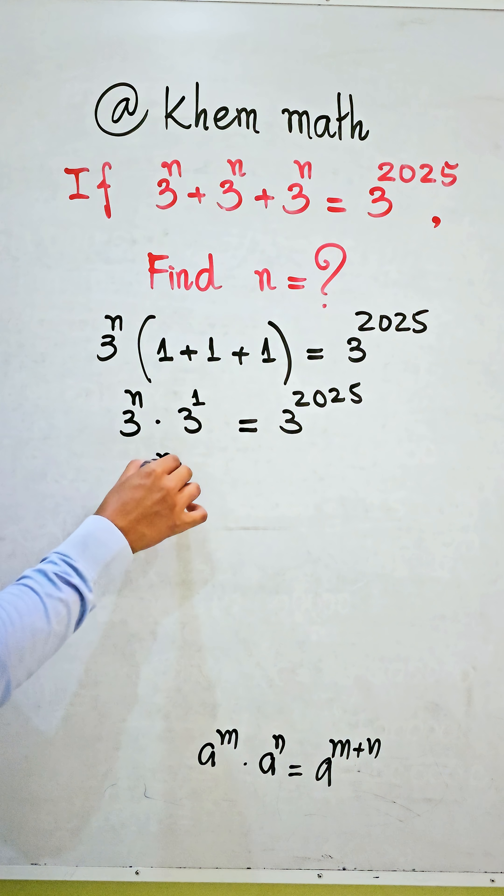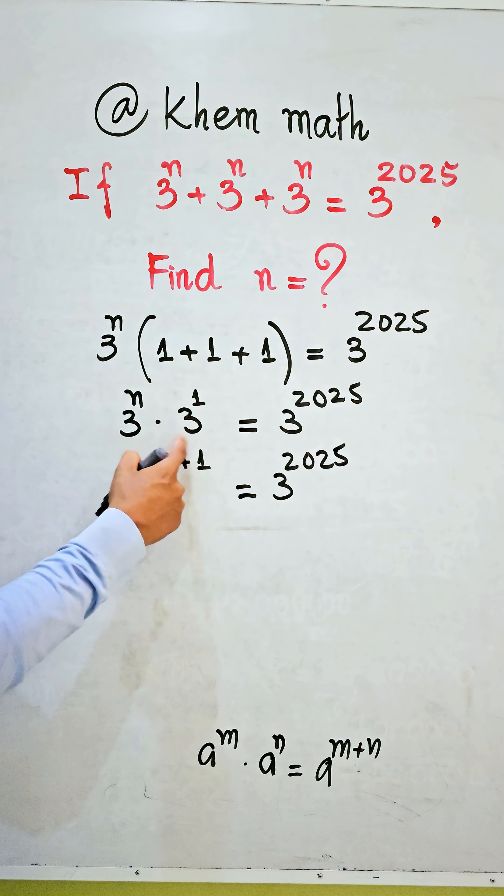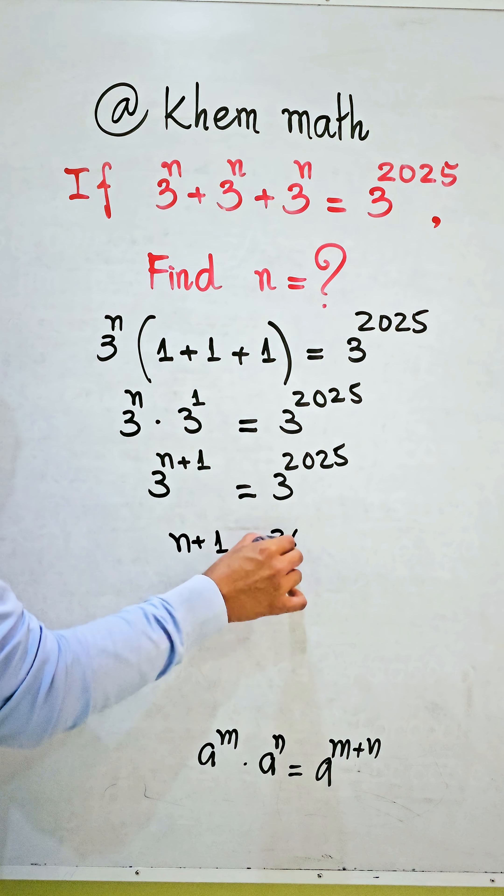Since we see the same base, we get exponent equals exponent. So n plus 1 equals 2025. We change 1 to the right-hand side.